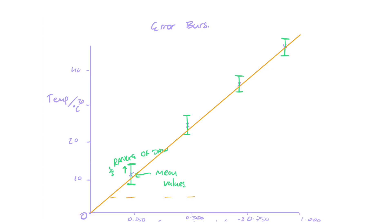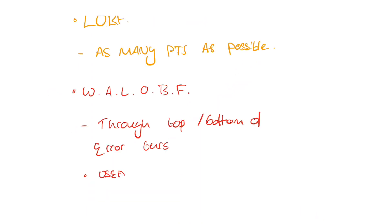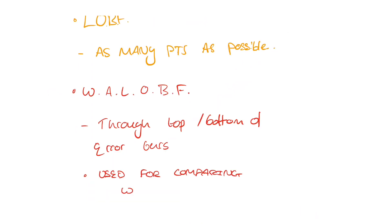The line of best fit goes through as many points as possible or as close to them as possible. To find the gradient of your line of best fit, draw as large a triangle as you can, then find the change in y and change in x. Rise over run. The worst acceptable line of best fit is a line of best fit that barely goes through the error bars, so it's still a good line, which could be better. The reason we do this is to quantify the uncertainty in the data, so you can find the percentage uncertainty in the gradient.